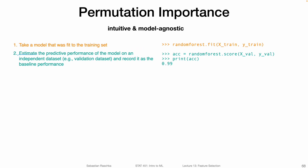Then what we do is we estimate the predictive performance of the model on an independent dataset — for example, the validation dataset or the test set — and record it as the baseline performance. Using a fitted random forest, we compute the accuracy on the validation set. Let's say we get 99% accuracy as the validation set performance, and we record this as our baseline performance.